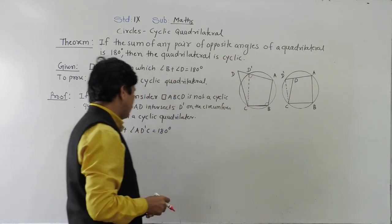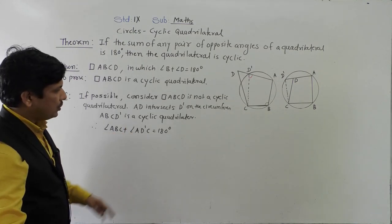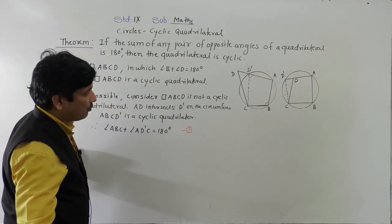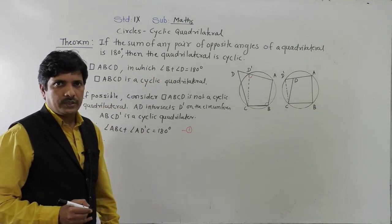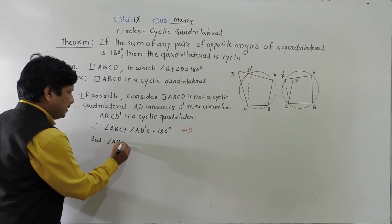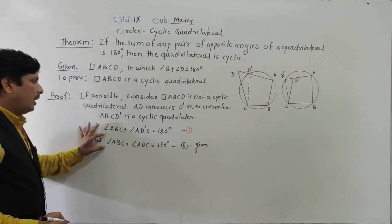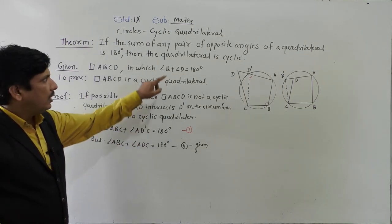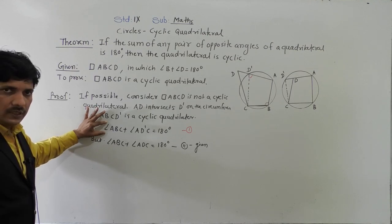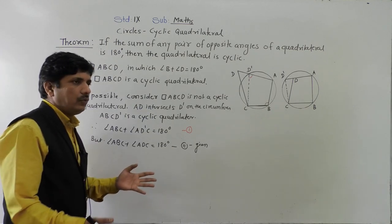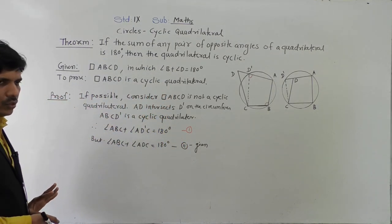If ABCD dash is a cyclic quadrilateral, then by the property we just proved — sum of opposite angles is 180 degrees — we can say angle ABC plus angle AD dash C is equal to 180 degrees. This is equation one. But what is given? Angle B plus angle D equals 180 degrees, meaning angle ABC plus angle ADC is equal to 180 degrees. This is equation two, which is given.